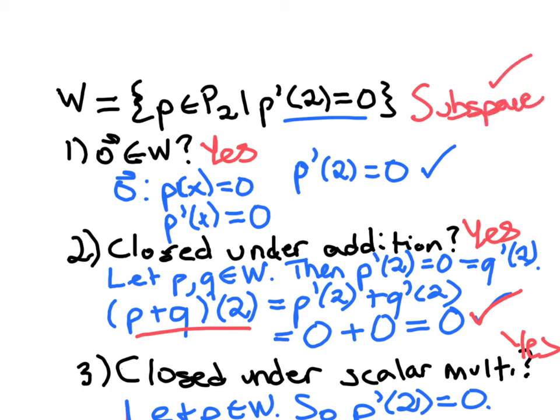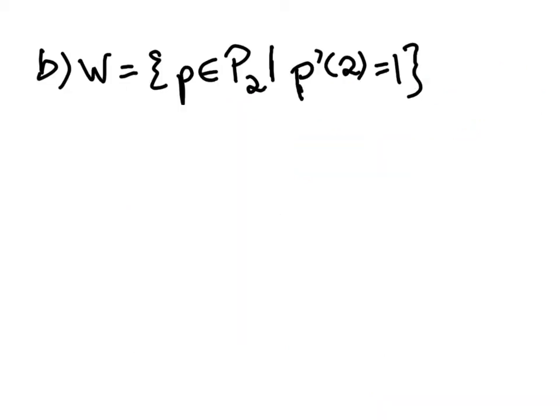Okay, but looking at part B here, now what if we just change this slightly? Now W is the collection of polynomials in P2 such that the derivative at P2 is 1. That's actually going to fail all three of those criteria. The 0 vector is not included in this set. It is not closed under addition. It's not closed under scalar multiplication.